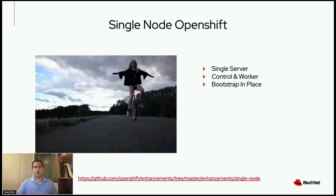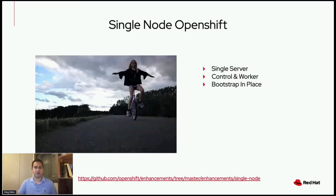When installing a single node OpenShift, you only need the node you wish to install onto. A few things to keep in mind: single node OpenShift, or SNO for short, is still in developer preview in OpenShift 4.8. It requires at least 8 vCPU cores, 32 gigs of RAM, and at least 120 gigabytes of storage. It does not support adding additional hosts after installation, and it is not highly available, meaning you cannot expect zero downtime for your Kubernetes API.